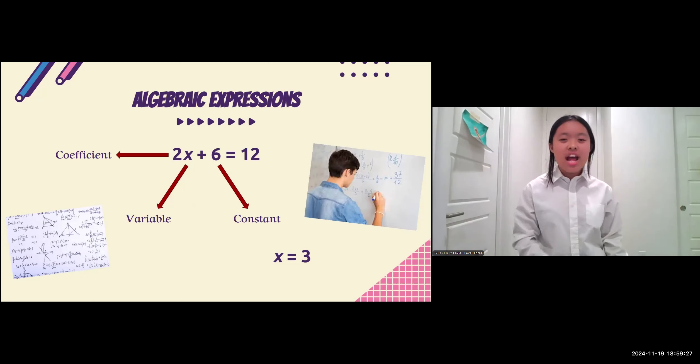So, in this equation, we have the coefficient. The coefficient can be described as just the whole number that you multiply the variable by to get the answer.